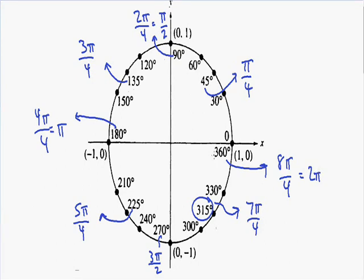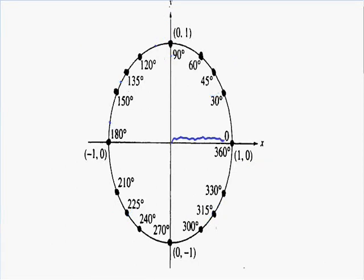Notice that after you've rotated 360 degrees around the circle you're back at 0 degrees, so 0 degrees and 360 degrees are exactly the same, both equal to 2 pi. Now let's talk about the different points on the circle. Because this is the unit circle, the radius equals 1 with the center at the origin. Going right 1 unit gives point (1, 0), going up gives (0, 1), going left gives (-1, 0), and going down gives (0, -1).